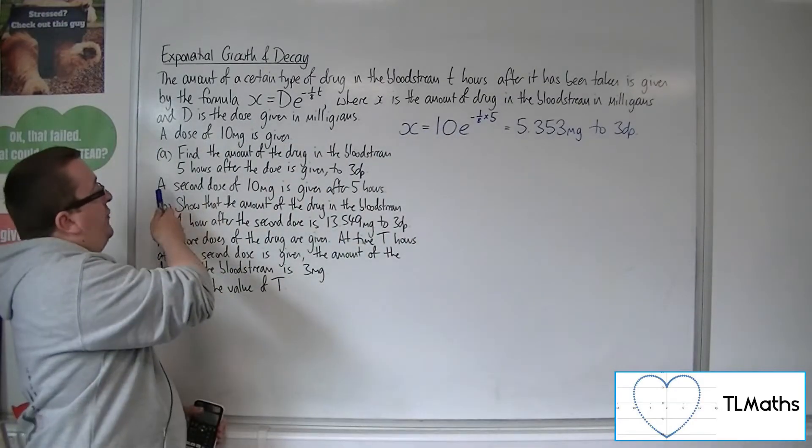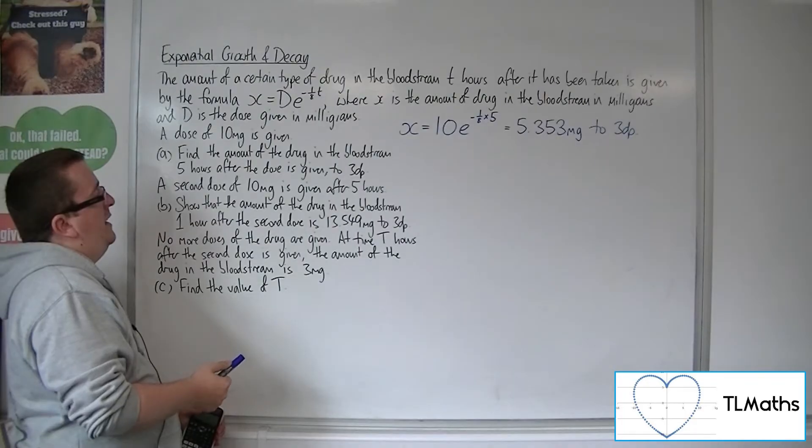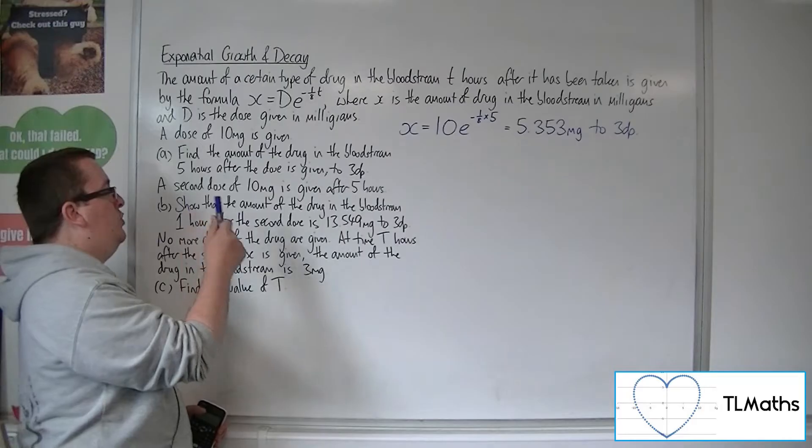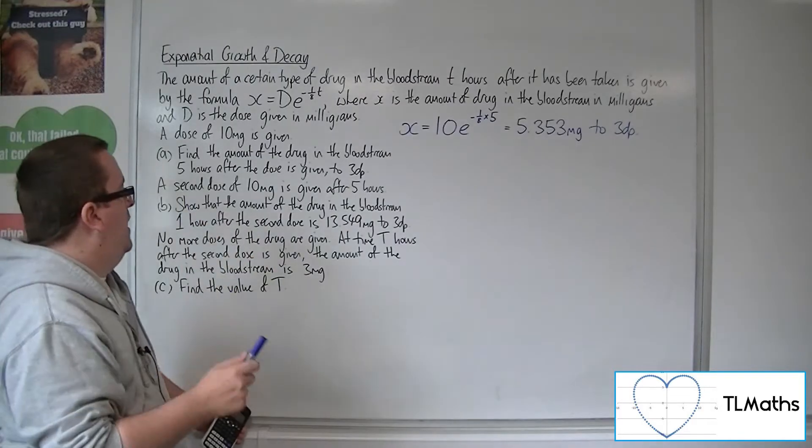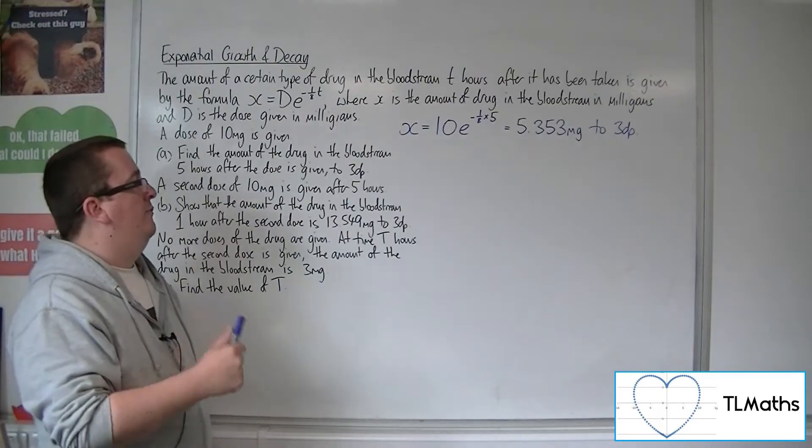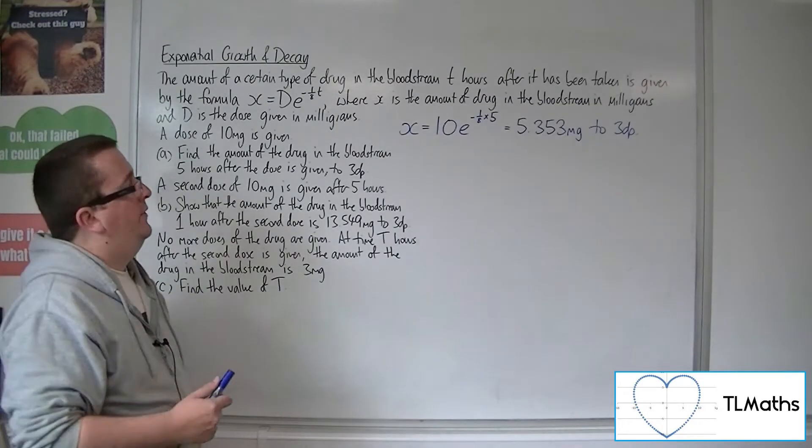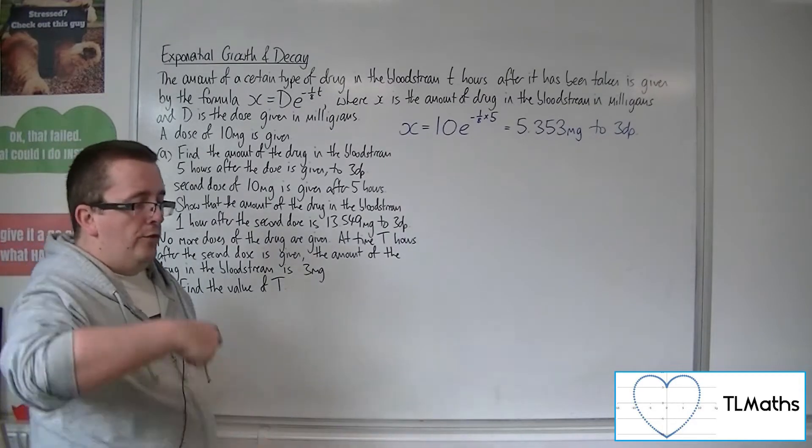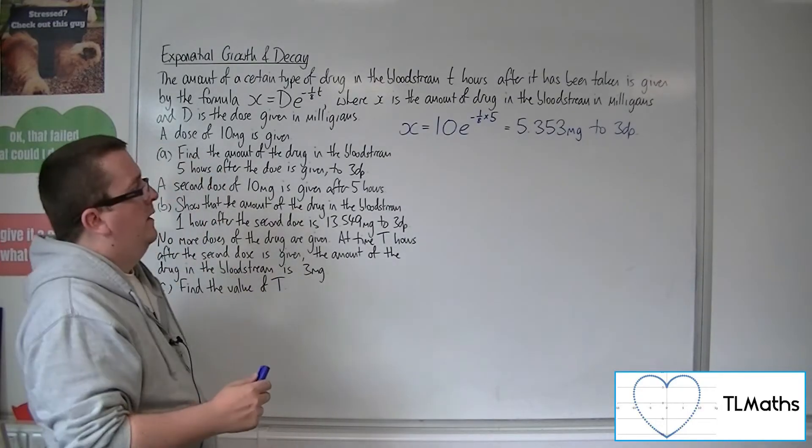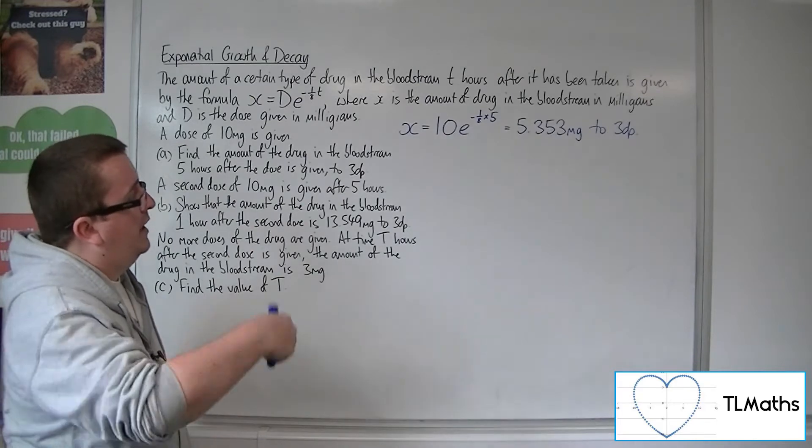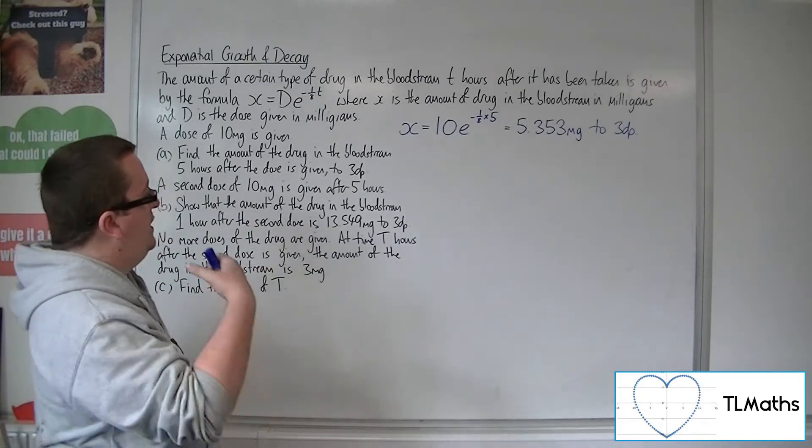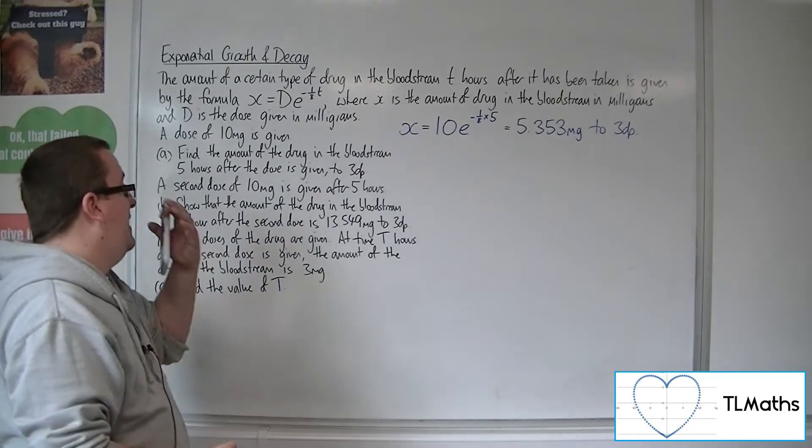Now, a second dose of 10 milligrams is given after five hours. Show that the amount of the drug in the bloodstream one hour after the second dose is 13.549 milligrams to three decimal places. Okay, so you've got the first dose in the system, that is still going to be wearing off effectively, but then you've got this new dose that's been added in.